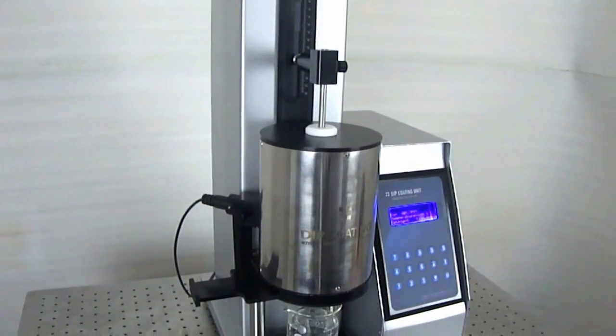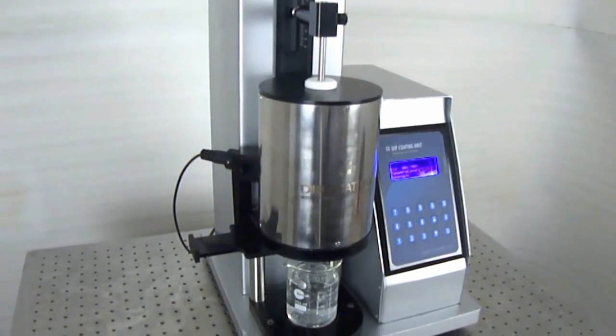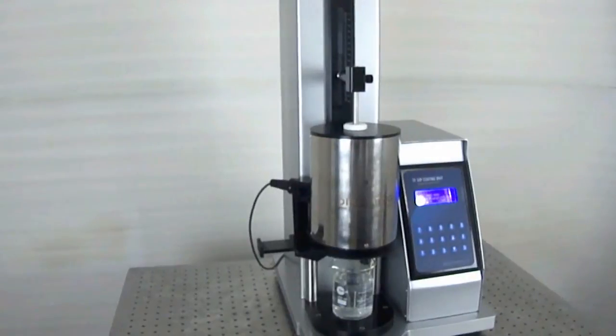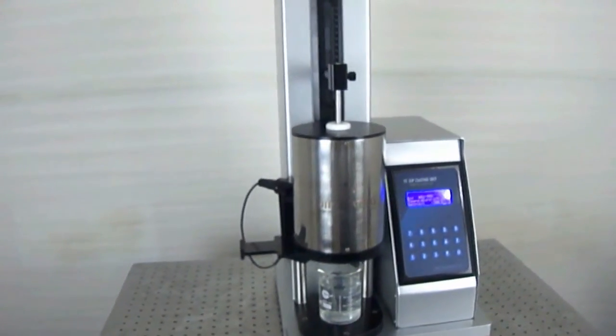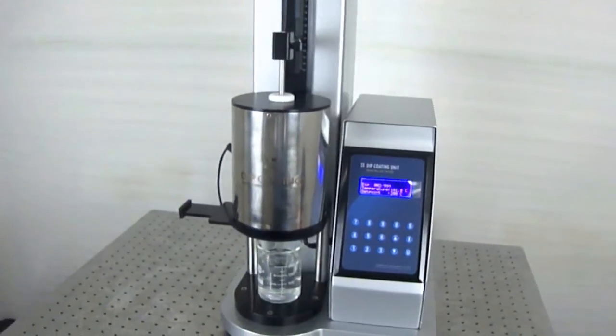HomeArcs Dip Coating Unit with Infrared Dryer is a dedicated tabletop device for dip coating of thin films. This unit is equipped with an infrared dryer that is used for drying the substrate after the coating has been made.